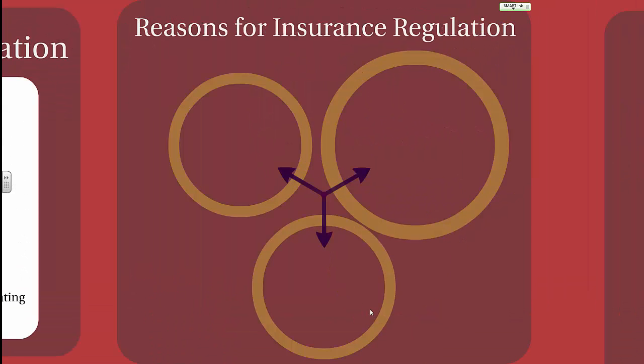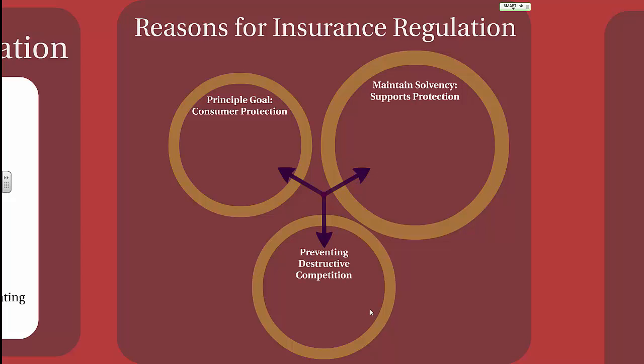Now that we've established how insurance regulation got to where it is today, let's talk about reasons for insurance regulation. First, we'll talk about the principal goal, which is consumer protection, and then maintaining solvency, which supports consumer protection, and preventing destructive competition.